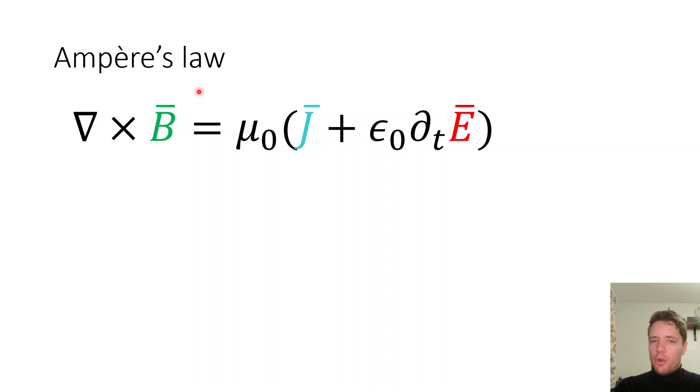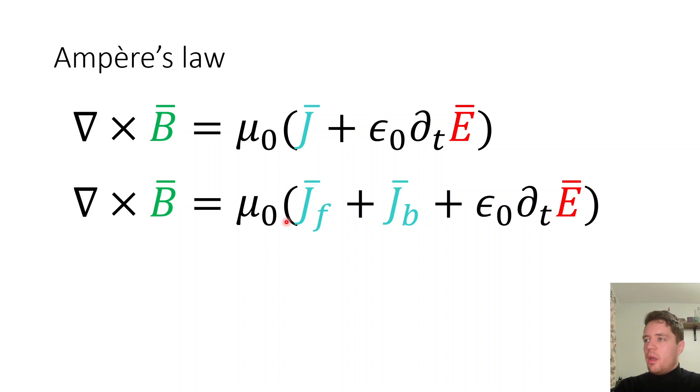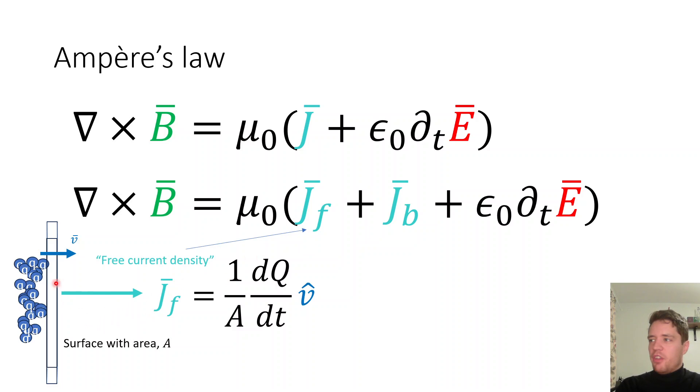So why do we care about this little contribution here to the current term? Well, the reason is that if we consider Ampere's law, we can see that the curl of the magnetic field depends on both the change in E field over time, but also on the current density. And if we split that up into two components, the free component and the bound component, where the free current, of course, is defined as just the motion of free charges through a given region per second, and the bound current density, we can see they both play an important role, namely the fact that the bound current is just equal to the change in the polarization over time, as we saw in the previous slide right here.